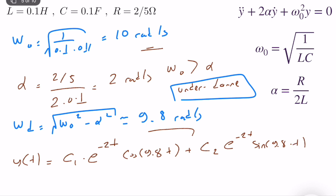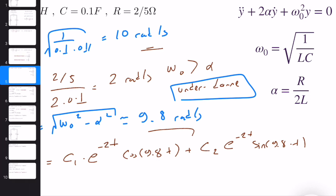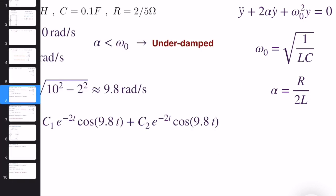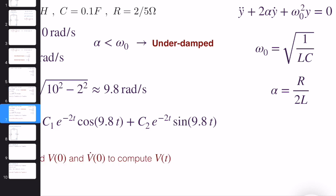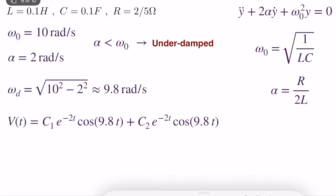The sine and cosine terms give attenuation and oscillation. The general solution is: V(t) = C1·e^(−2t)·cos(9.8t) + C2·e^(−2t)·sin(9.8t). To find C1 and C2 we need two initial conditions, since this is a second order ODE. We need V(0) and V̇(0).